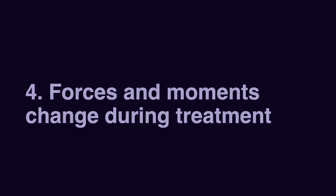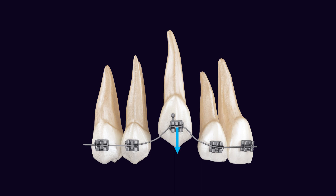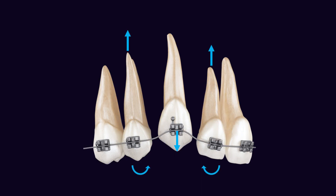Another limitation of semi-restricted design is that the direction of the forces and moments can change. This is especially important when you have a major movement and you did not design your mechanics properly — for example, you decided to take a shortcut and just put a flexible wire to do extrusion of the canine. During this movement, many times the forces and couples can change direction.